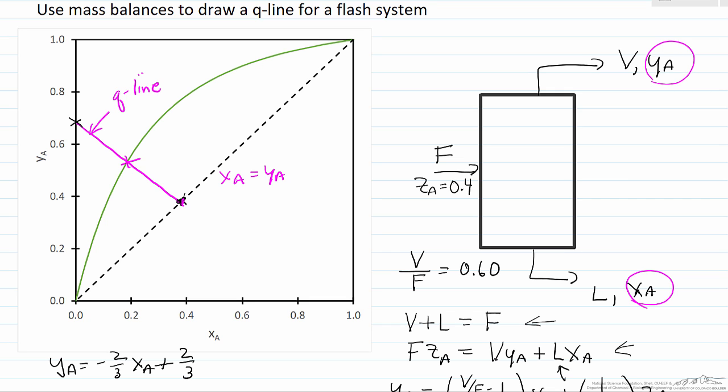So if we have a given feed composition and we fix what fraction is going to be in the vapor phase, in order for it to satisfy the mass balances and to satisfy phase equilibrium, we have to be at a specific temperature. That's something then we can go back and read off of a TXY diagram.